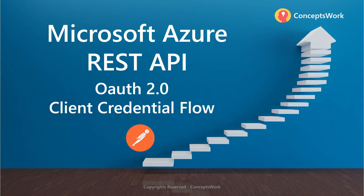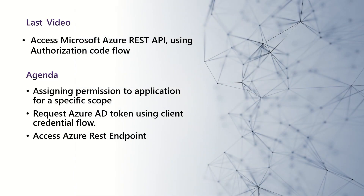Hi everyone, hope you're all doing well. Welcome back to our channel. In this video I'm going to show you how you can access Microsoft Azure REST API using OAuth 2.0 client credential flow. If you're watching the series from the beginning, in the last video we discussed accessing Microsoft Azure REST API using authorization code flow. There are many concepts I covered there, so please watch that first. We already created a dedicated application and in this video we're going to assign permissions to that application directly, because there is no user interaction — it's client credential flow.